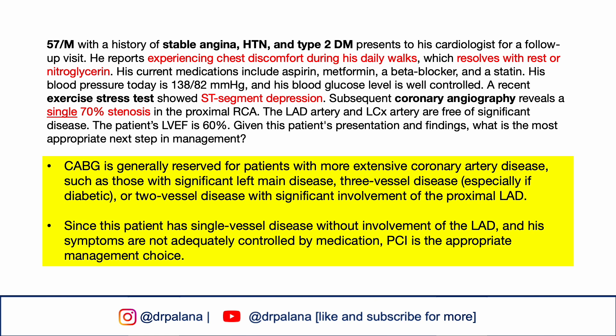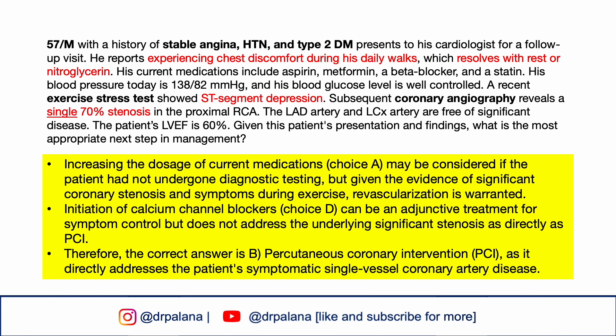CABG is generally reserved for patients with more extensive coronary artery disease, such as significant left main disease, three-vessel disease (especially if diabetic), or two-vessel disease with significant involvement of the proximal LAD with diabetes. Since this patient has single-vessel disease without involvement of the LAD and symptoms are not adequately controlled by medication, PCI is the appropriate management. Increasing current medications may be considered if the patient had not undergone diagnostic testing, but given significant coronary stenosis and symptoms during exercise, revascularization is warranted. Initiation of calcium channel blockers can be adjunctive for symptom control but does not address the underlying stenosis as directly as PCI.